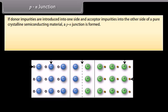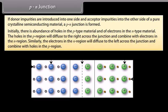P-N junction: If donor impurities are introduced into one side and acceptor impurities into the other side of a pure crystalline semiconducting material, a P-N junction is formed. The donor ion is indicated by a positive sign because after the impurity atom donates an electron, it becomes a positive ion. The acceptor ion is indicated by a minus sign because after the atom accepts an electron, it becomes a negative ion. Initially, there is an abundance of holes in the P-type material and electrons in the N-type material. The holes in the P-region diffuse to the right across the junction and combine with electrons in the N-region.